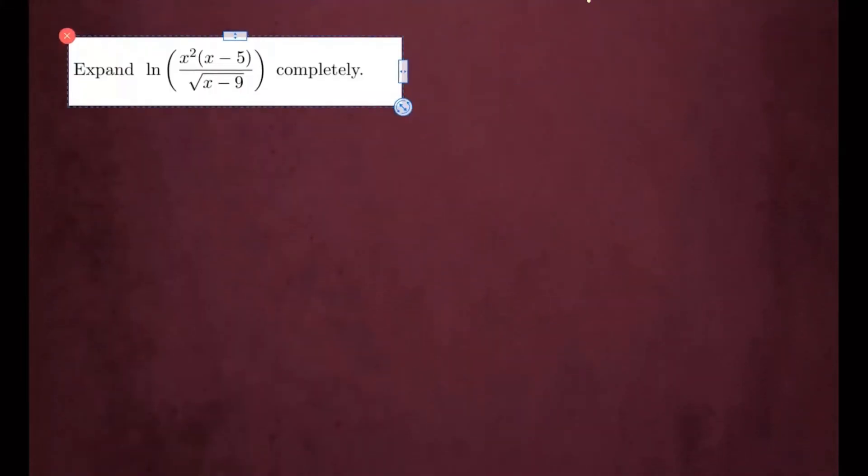So we want to expand using the laws. I see I have something on top over something else on the bottom, so I'm going to separate them into two logarithms differences.